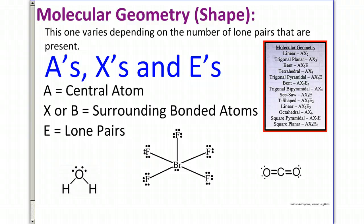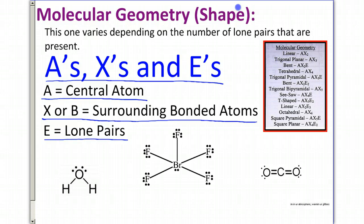The molecular geometry is going to be a second description that we're going to give it. So you're going to tell me two things, the electron domain geometry, and then the molecular geometry, which is more specific. It's the shape of the molecule. And it all depends on whether or not we have lone pairs present. We're going to count the A's, X's, and E's for each of my molecules. A is my center atom. X or B is the surrounding bonded atoms. And E is my lone pairs. We'll use this chart over here to determine what is the molecular geometry. That chart is provided for you on the back of your periodic table.